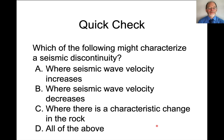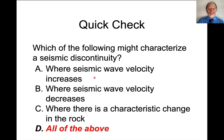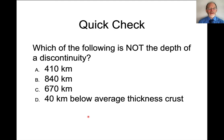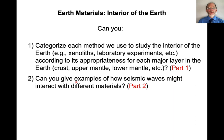Which of the following might characterize a seismic discontinuity? The answer is all of the above — a seismic wave velocity can increase or decrease at a discontinuity, and usually it corresponds to a characteristic change in the rock. Which of the following is not the depth of a discontinuity? The answer is 840 kilometers — there's nothing particular going on there. At this point, I hope you can give examples of how seismic waves interact with different materials, especially focusing on the difference between their interaction with solids versus liquids. Thanks very much — see you soon.